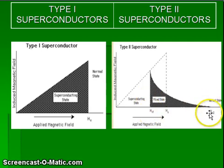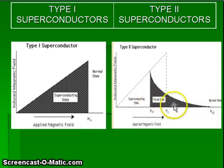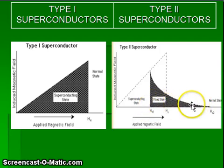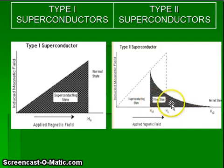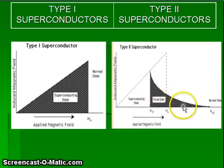and upper critical field, this state is called the mixed state or vortex state. In this state, the material exhibits both the superconducting state and the normal state — the material behaves as a superconductor as well as a normal conductor in between these two fields.